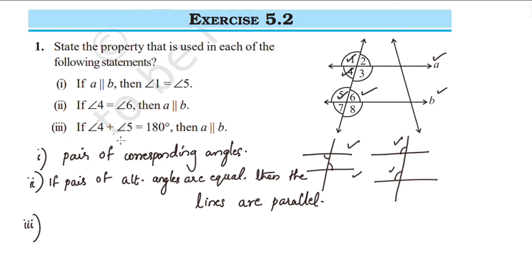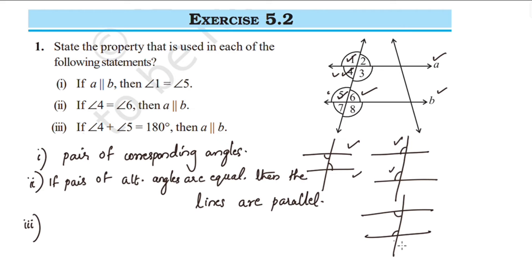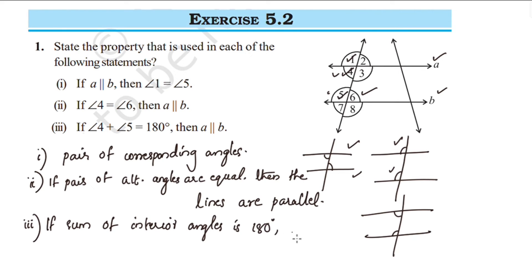Third: if angle 4 plus angle 5 is equal to 180 degrees, then A is parallel to B. The property used is that the interior angles on the same side of the transversal are supplementary. If the sum of interior angles is 180 degrees, then the lines are parallel.